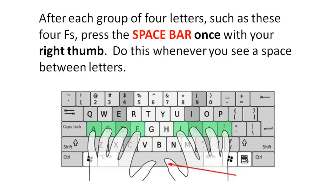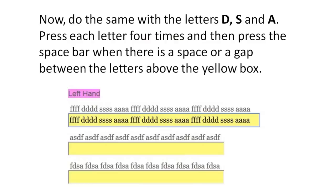After each group of four letters, such as these four F's, press the space bar once with your right thumb. Do this whenever you see a space between letters. Now do the same with the letters D, S and A — press each letter four times and then press the space bar where there is a space or gap between the letters above the yellow box.